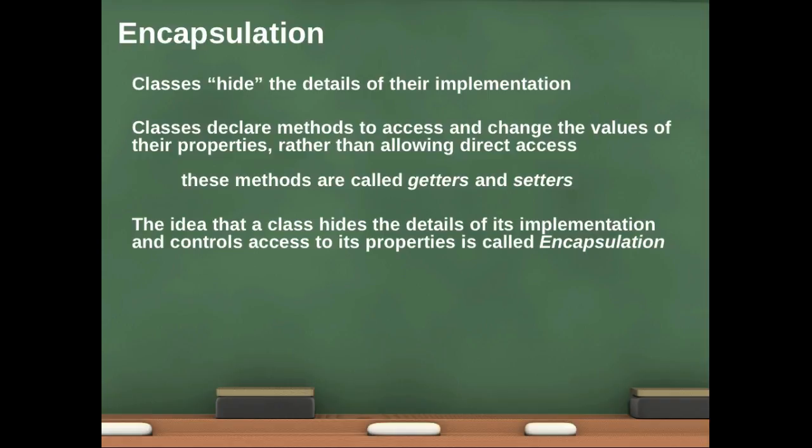One way that they do this, the primary way they do this, is that they will declare methods to access and change the values of their properties, rather than allowing people to directly access those properties. And this is good. The methods that we're talking about here are called getters and setters. We use getters to access the value of a property, to get it, and we use setters to set a value of a property. So this idea that a class hides the details of its implementation and controls access to its properties, this whole idea is called encapsulation.